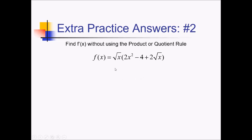For this one, they want us to find f' of this product without actually using the product rule. So let's go ahead and simplify this and then use the power rule. Before I do that though, let me turn this radical x into an x to the 1 half power, making this 2x to the 1 half — a little bit easier to use the power rule.